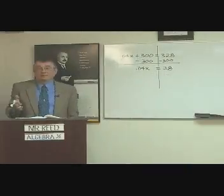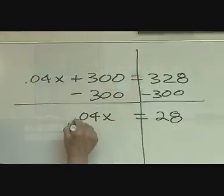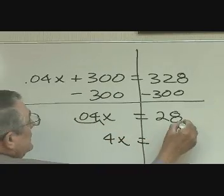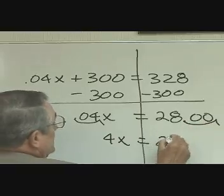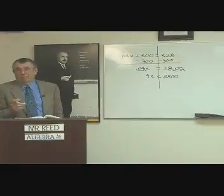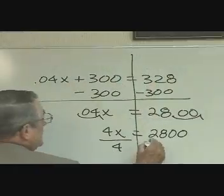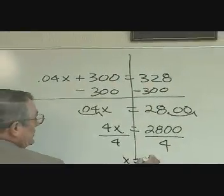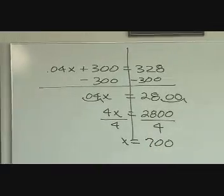Now I don't like decimals any more than you do. And so I'm going to get rid of that decimal. If I move it two places here to become 4x, then I have to move it two places here. And that becomes 2800, 700. As we learned today, what is the opposite of multiplication? It is division. So x is equal to 700. Okay?